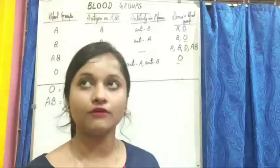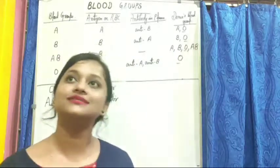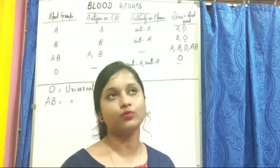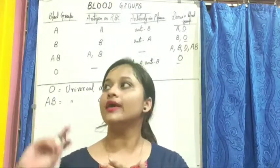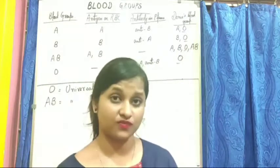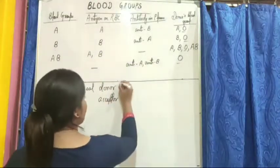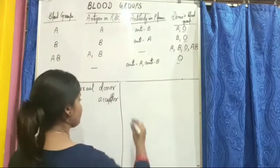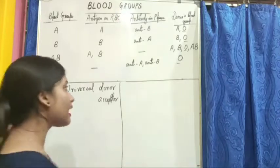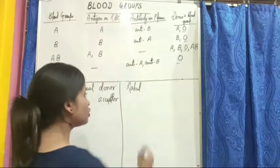Now let us answer the question I raised at the beginning: why is blood not transferred among persons having different blood groups? Suppose there are two persons — first person's name is Rahul, and Rahul's blood group is A.